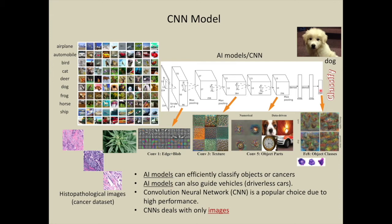The output at the fully connected layer can be the class label of the input object. For example, if a dog image is given at the input, the output label will be dog. AI models can efficiently classify objects or cancers and guide vehicles like driverless cars. CNN is a popular choice due to high performance. However, CNN deals only with images, meaning the input should be an image.